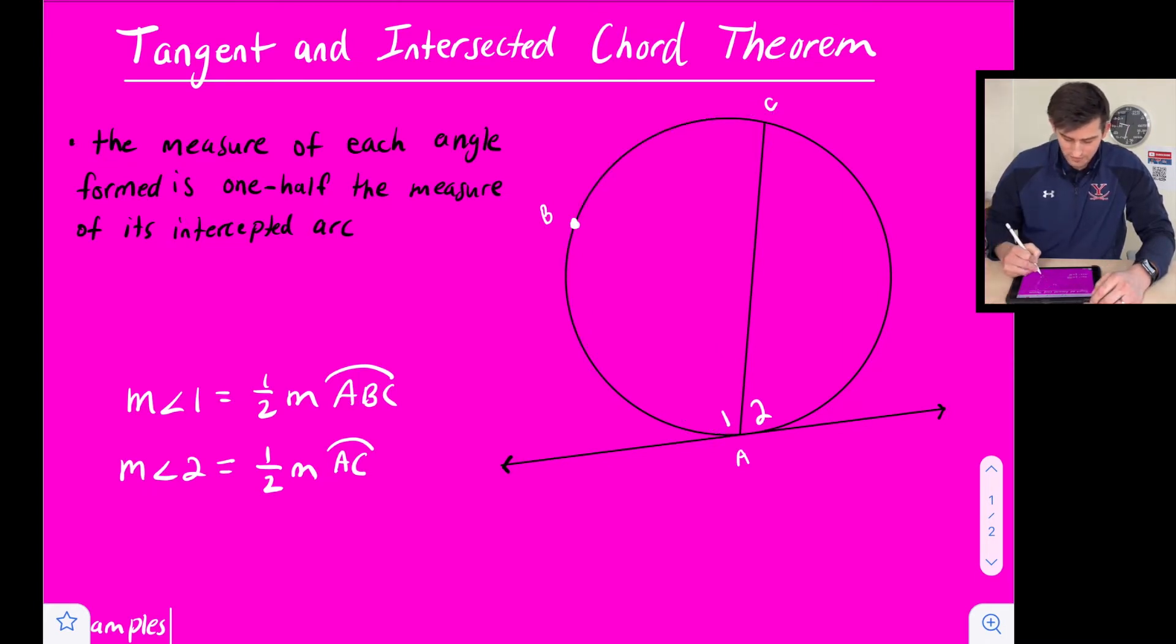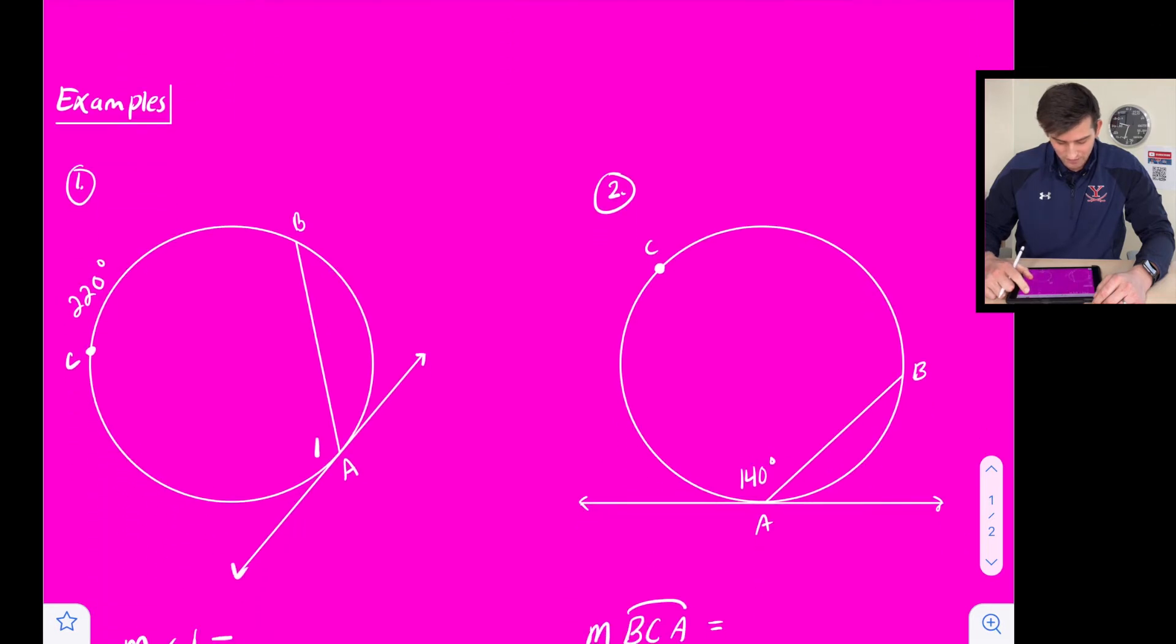For angle two our measurement is just going to be half of our minor arc which is AC and now we're going to take a look at a couple of examples.